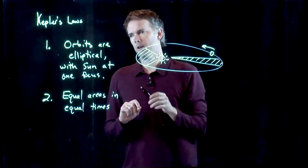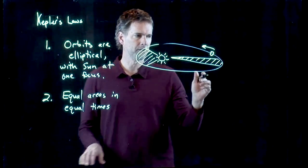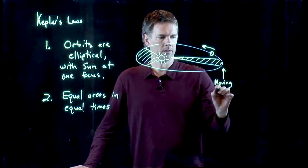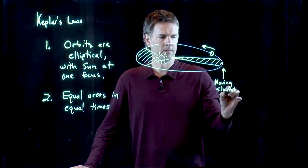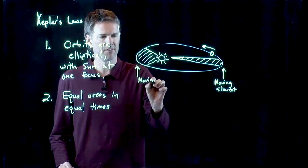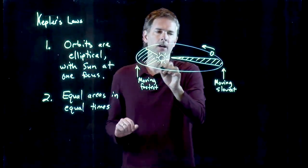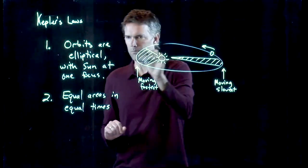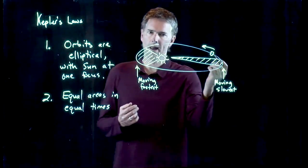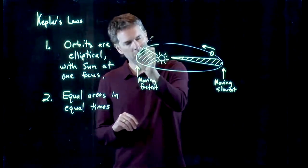So if this is one month of an orbit you get some number, and one month of orbit at the far end gives you the same number. This necessarily tells you that the planet is moving slowest out at the far end in order to get the same area as the region where it is moving fastest. The planet kind of zips in towards the Sun, goes back out, slows down a whole bunch, and then comes and does it again. This is sort of like the gravitational slingshot — when an object goes past a massive object, it is moving fastest when it's closest to it, and then it shoots back out.